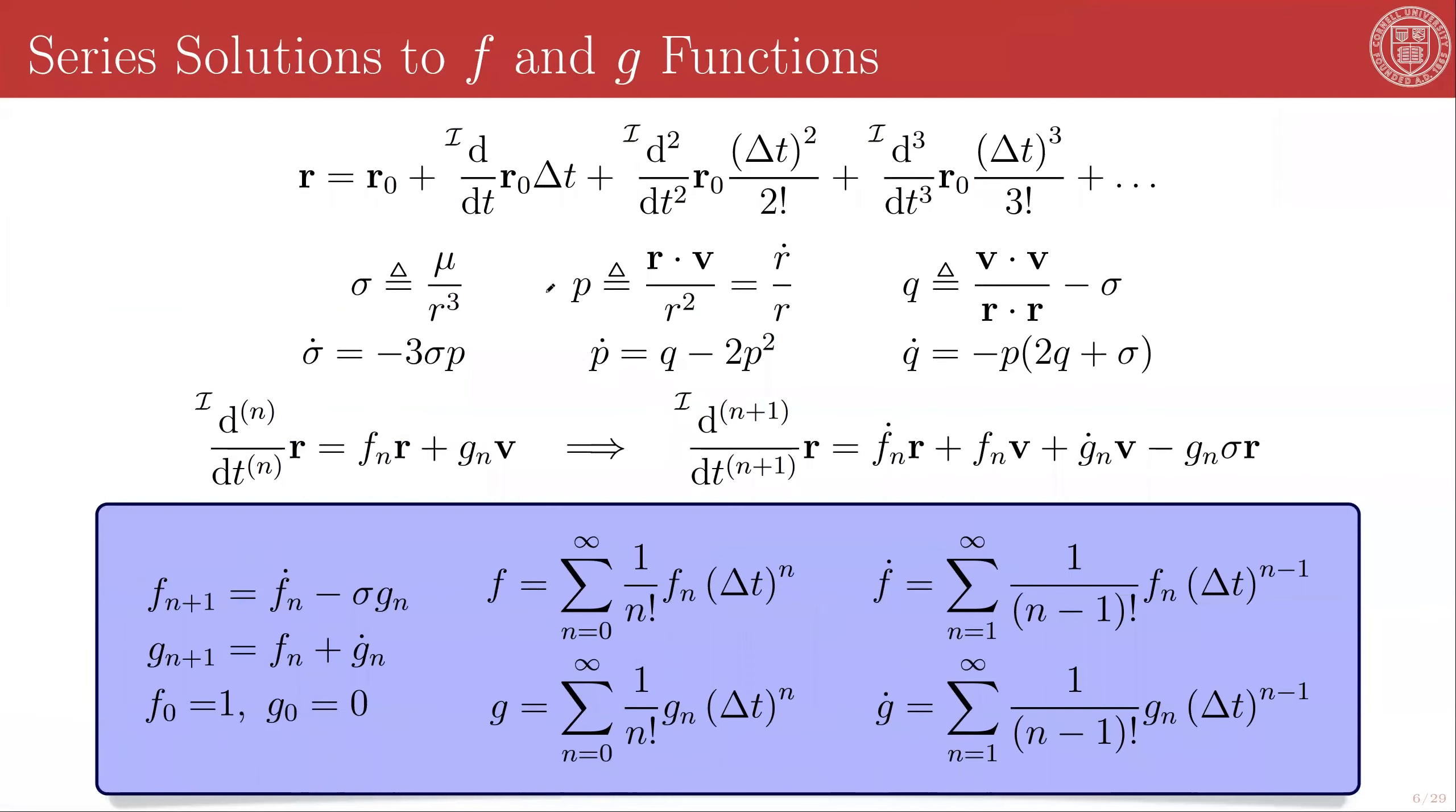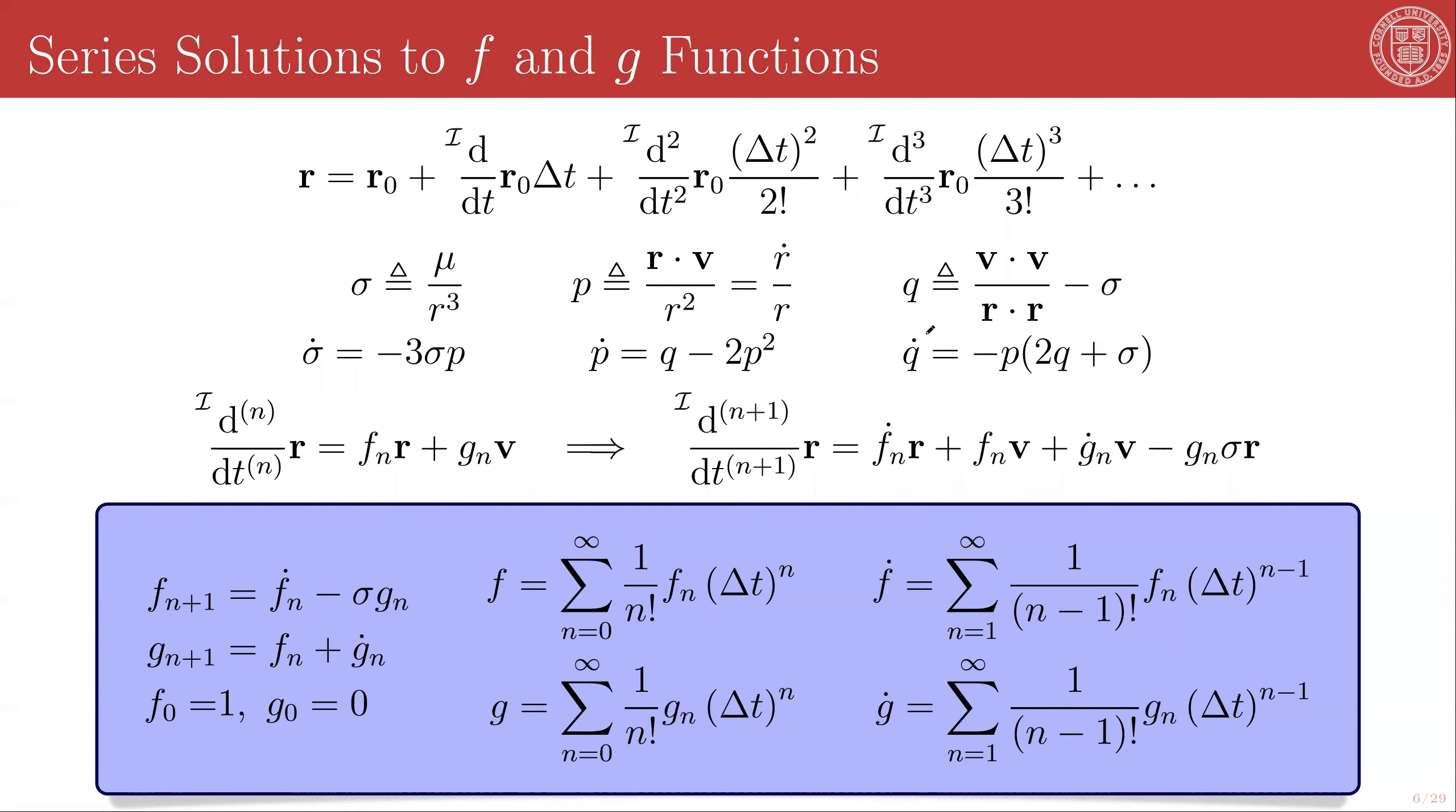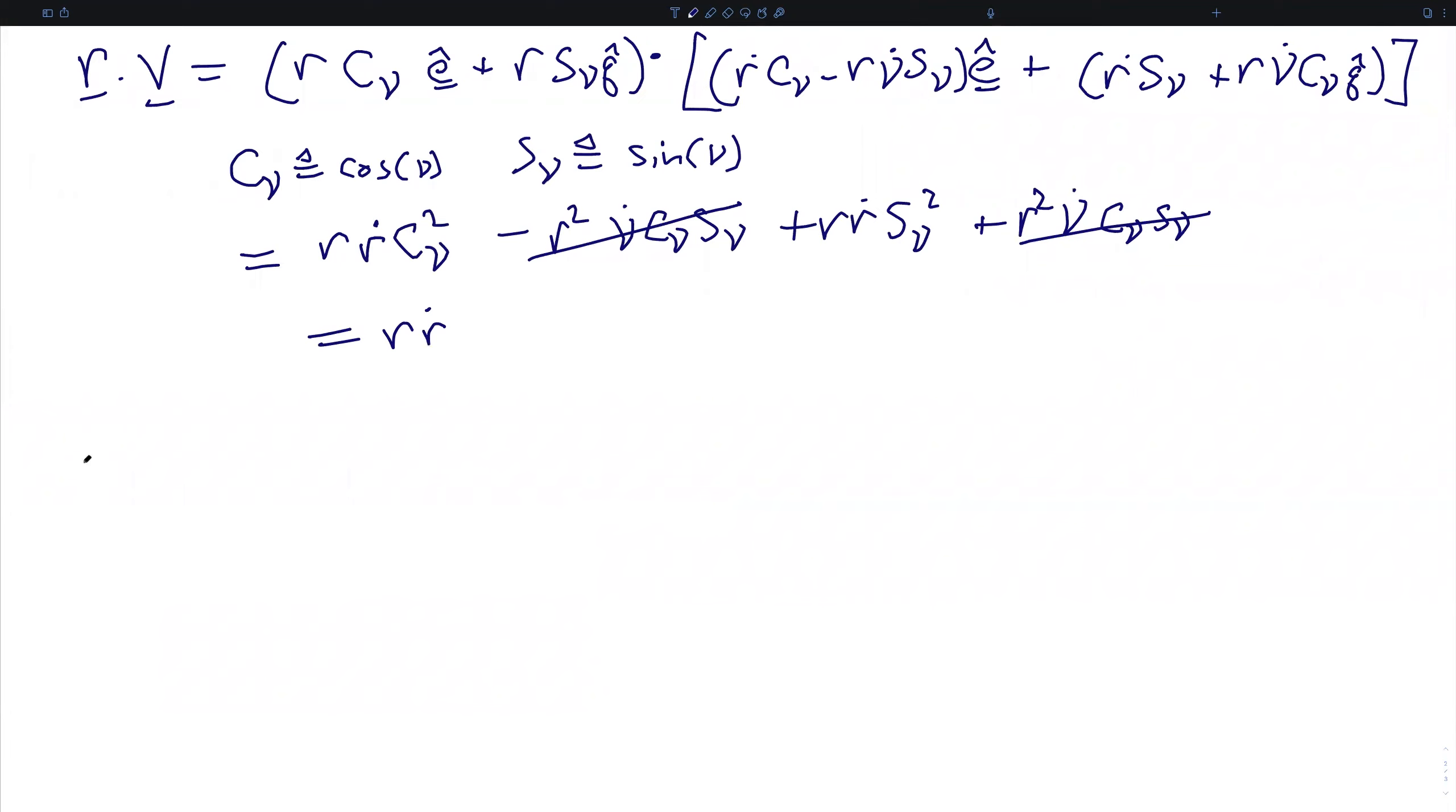This is the scalar derivative of the magnitude of r, which is different from the magnitude of the vector derivative of r. So we've defined our sigma, we've defined our p, and we've simplified it. And next, we define q, which is given by the norm squared of the velocity vector divided by the norm squared of the radius vector minus sigma. If we differentiate each of these quantities, we find that sigma dot, the time derivative of sigma, is equal to negative 3 sigma p. The time derivative of p is given by q minus 2p squared. And the time derivative of q is equal to negative p times the quantity 2q plus sigma. Again, let's make sure that this all holds.